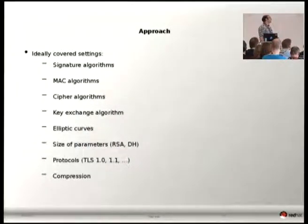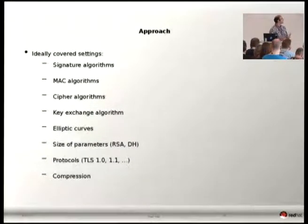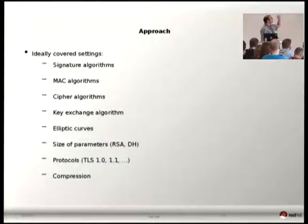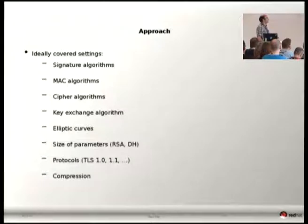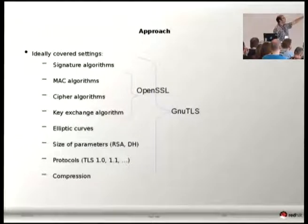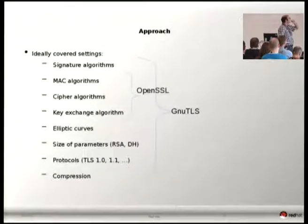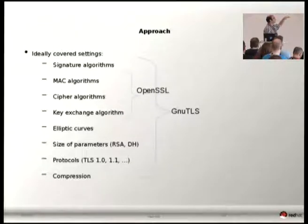Ideally, we wanted to cover every cryptographic aspect of the application in that policy — from signature to MAC algorithms, to cipher algorithms, to key exchange algorithms, elliptic curves allowed, the size of parameters allowed for RSA or Diffie-Hellman, the protocols allowed, and even compression. Our current state is that GnuTLS is able to cover the whole set of options, while on OpenSSL we are restricted to MAC algorithms and key exchange.